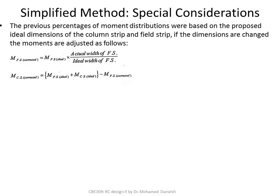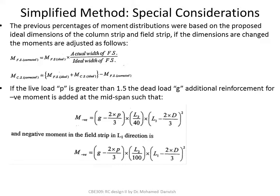For a field strip with an ideal dimension versus a column strip with an ideal dimension, you add them together and then subtract the corrected field strip moment to get the corrected column strip moment. As with solid slabs, if you have high live loads, you should provide additional reinforcement at the negative moment region using the formula involving G (dead load) and P (live load), where L1 and L2 are the long and short span dimensions.